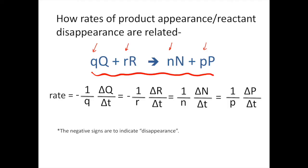When we look at the rates, notice there's a negative sign for reactants Q and R. That's because we're looking at the disappearance of these reactants, but our rates are always going to be positive numbers. The negative sign is just convention to give us a positive value for the rate.